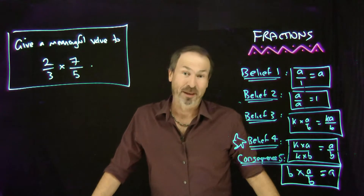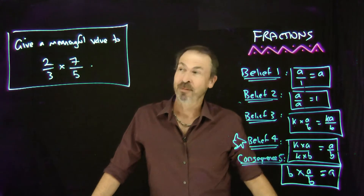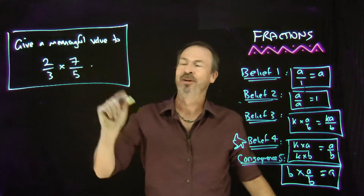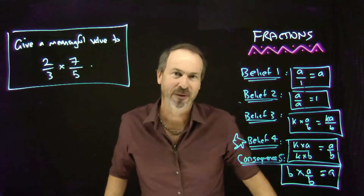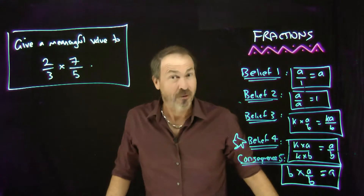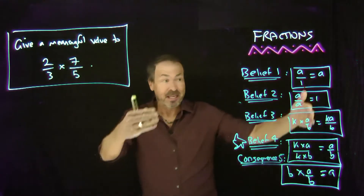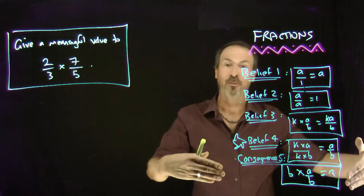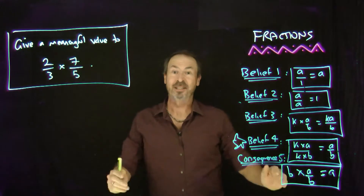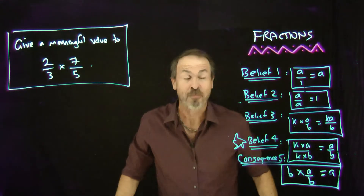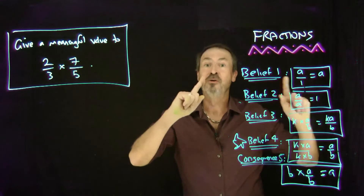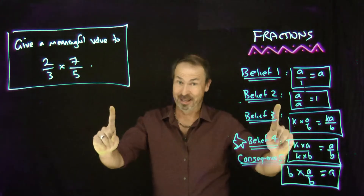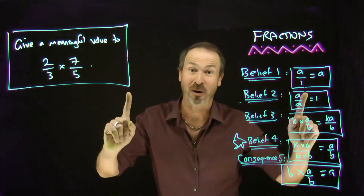Let's now talk about multiplication of fractions. Let's try to give a meaningful value to the product of two-thirds and seven-fifths. What we've got to help us out are our basic beliefs about the mechanics of fractions. We believe these are the fundamental principles for how fractions work — a system of arithmetic where these rules hold no matter what.